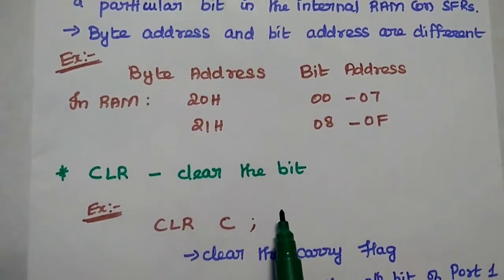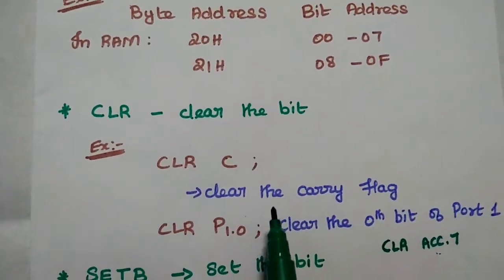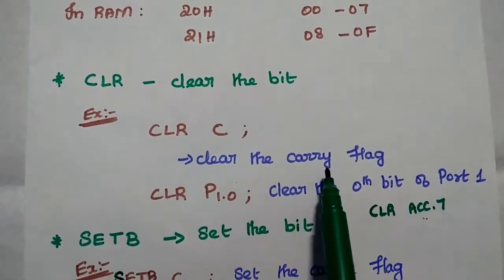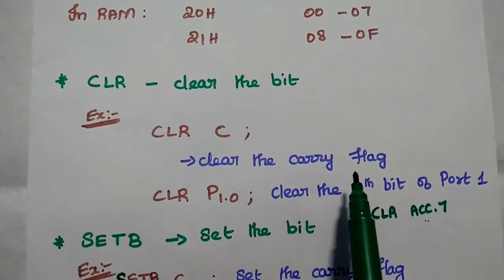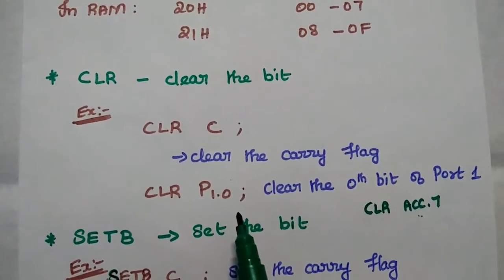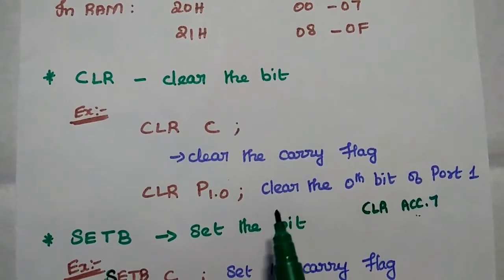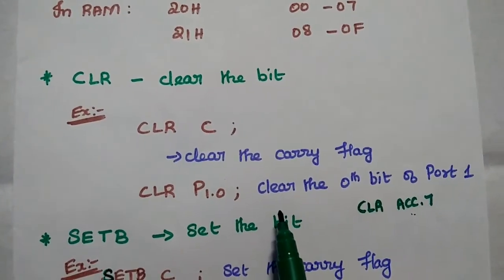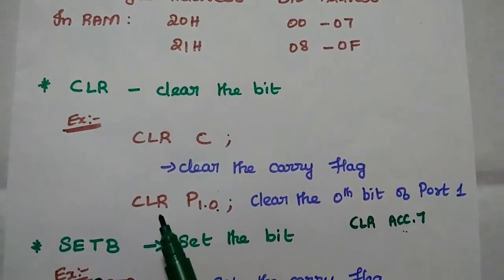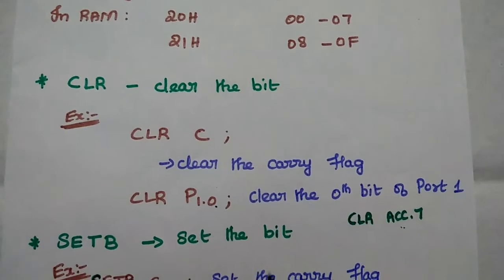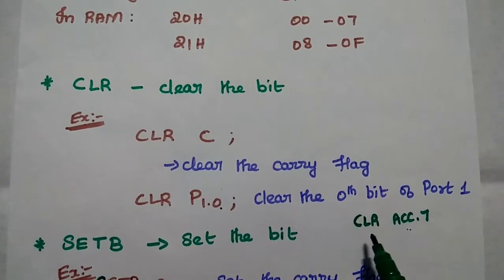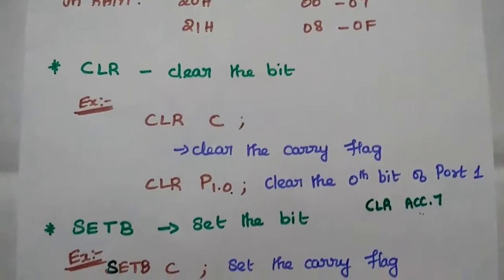The first bit-level instruction is the clear instruction. CLR C clears the carry flag, making it 0. CLR P1.0 clears the 0th bit of port 1 — in the 8051 there are 4 I/O ports: P0, P1, P2, and P3. Similarly, CLR ACC.7 clears the 7th bit of the accumulator.